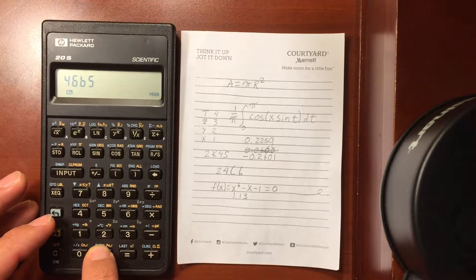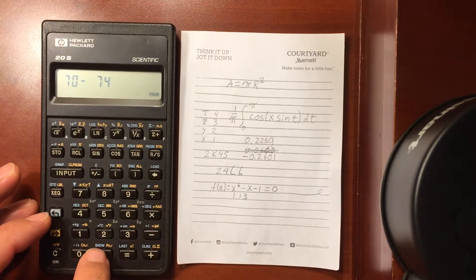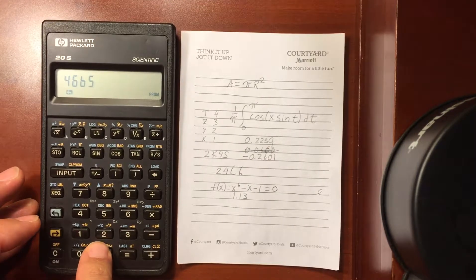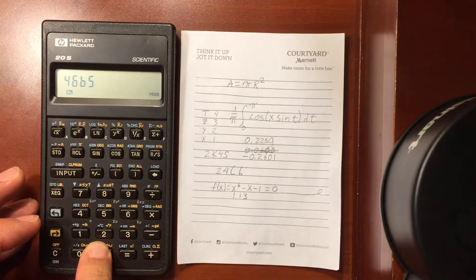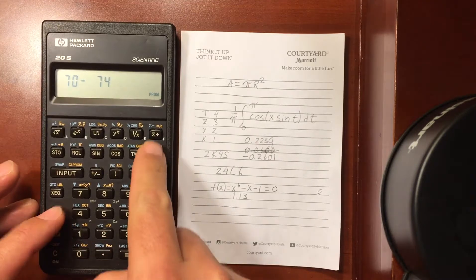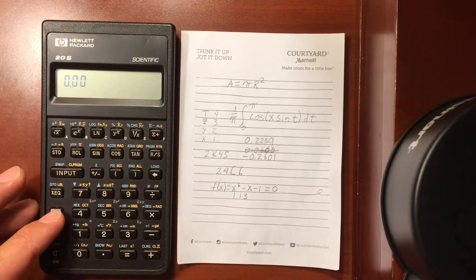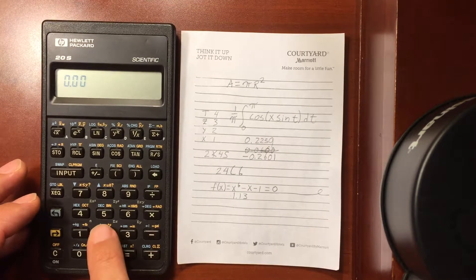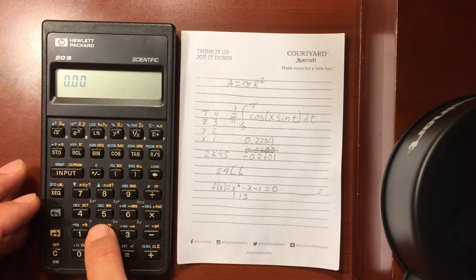Let me check the checksum real quick. I think that looks good. I just did shift show, and that gives me the checksum of the program: 46B5. Exit my program. Now I can enter in an initial guess for the root.